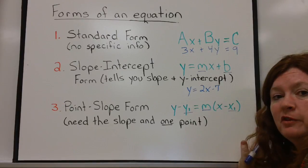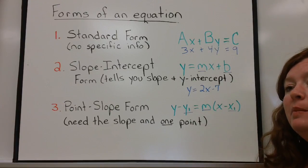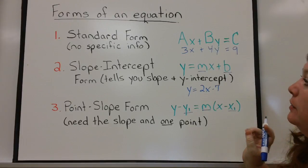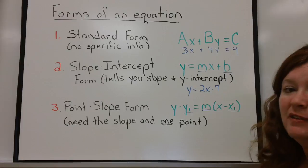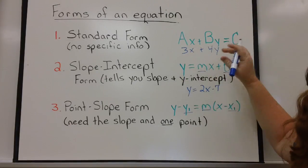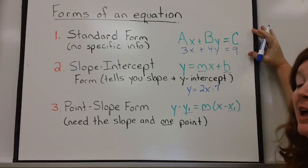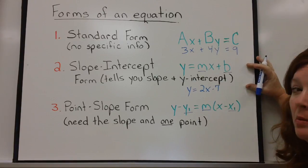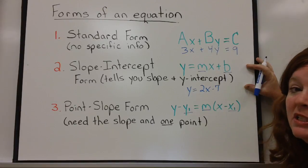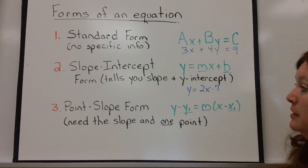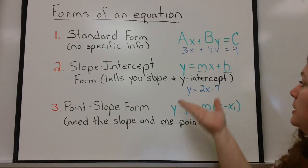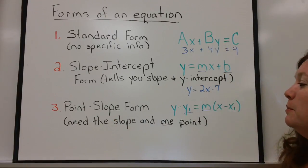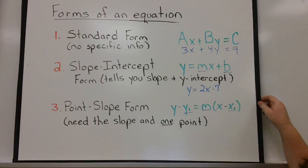What are we going to do with this information? We're going to start from the end and say, here's some information — now you tell me what the equation was. Standard form is very nice, but it gives me no specific information, so I have no place to plug in a slope or a point. We will never use standard form to create our own equation. Sometimes we might use slope-intercept form, but it's very rare you'll be given the slope and y-intercept. Point-slope form is the format we're going to use probably 95% of the time to write our equation.